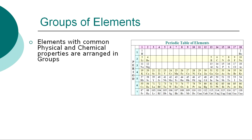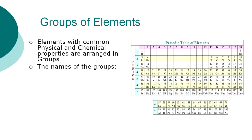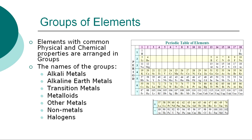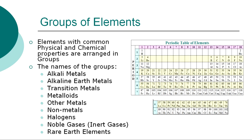Elements with common physical and chemical properties are arranged in groups. The names of the groups are alkali metals, alkaline earth metals, transition metals, metalloids, other metals, nonmetals, halogens, noble gases — also called inert gases — and finally the rare earth elements.